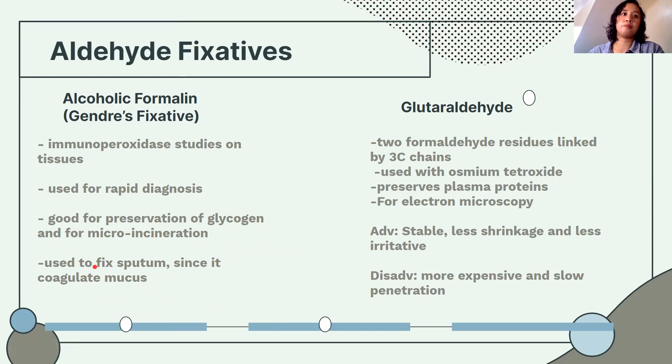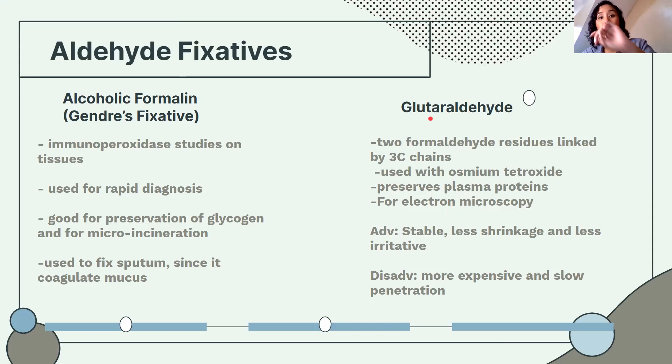Glutaraldehyde should be used at 3% concentration. It has two formaldehyde residues and is used with osmium tetroxide. It preserves plasma proteins and is the standout fixative for electron microscopy. However, it is very expensive, slower than formalin in penetration, but more stable, with less shrinkage and less irritation.